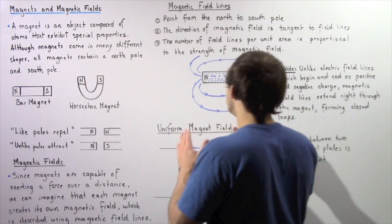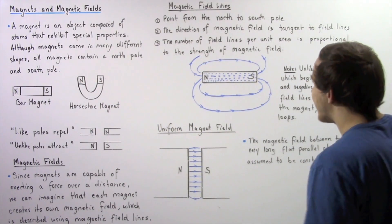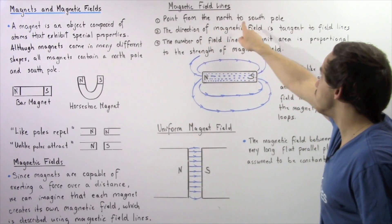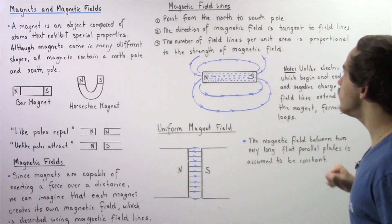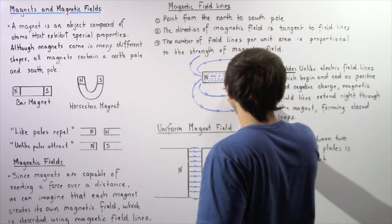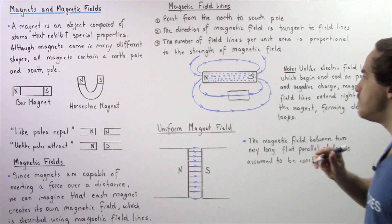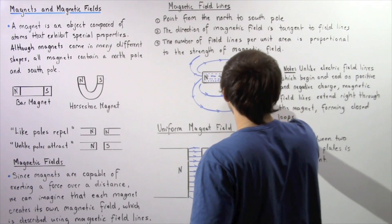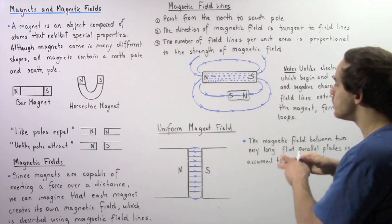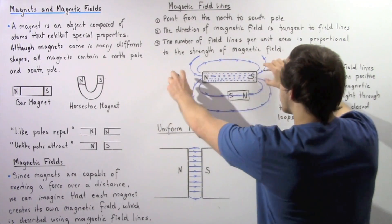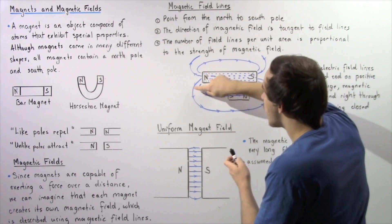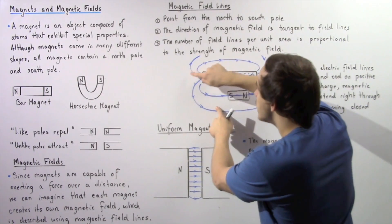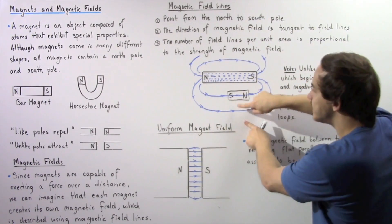Let's draw the magnetic field lines for a bar magnet. Notice that our magnetic field lines point from the north to the south pole. The direction of the magnetic field at any given point is always tangent to the magnetic field lines. If we place a second magnet within this magnetic field, it will arrange itself so that its north pole points toward the south pole and its south pole points toward the north pole of our first magnet. Also, because the number of field lines per unit area is greater near the poles, the magnetic field in that area is greater than farther away.